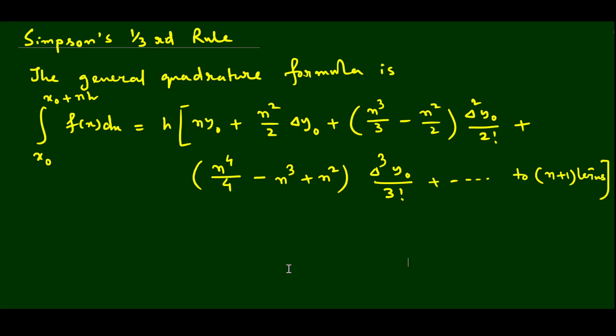Hello everyone, welcome back. Today we will learn a very interesting general quadrature formula which is called Simpson's one-third rule or Simpson's one-third formula. In our last lecture we learned what the trapezoidal rule is and how we derive it by putting n equals to 1 in the general quadrature formula.